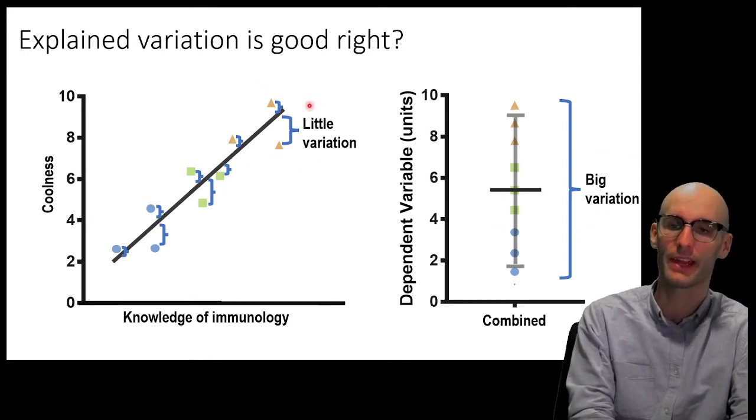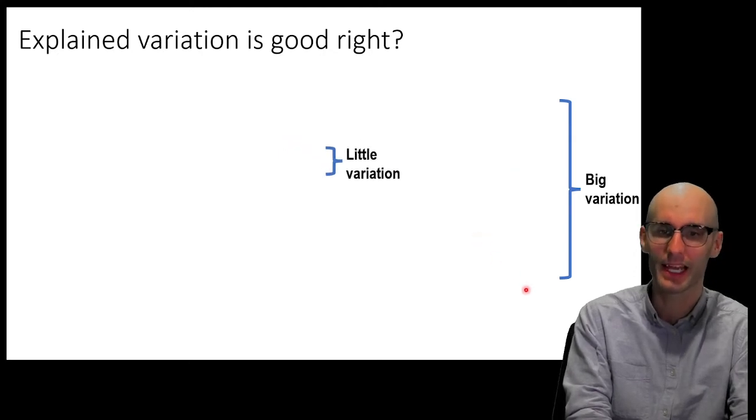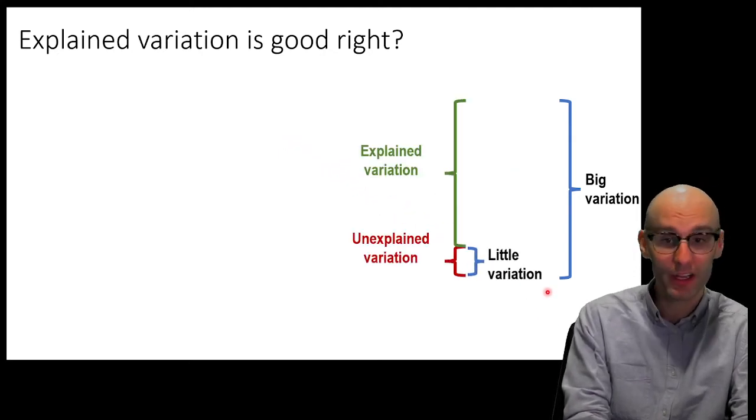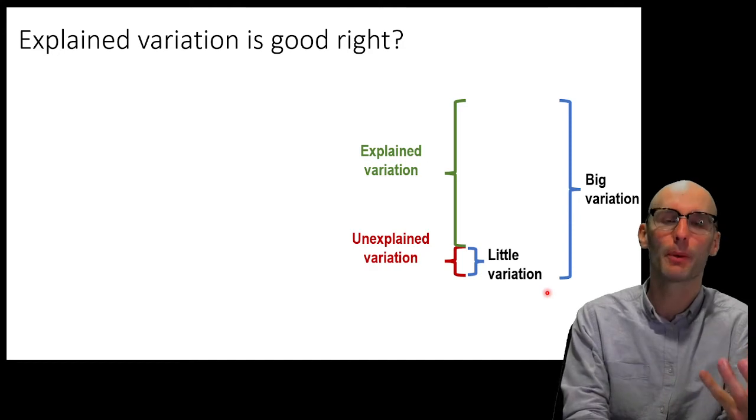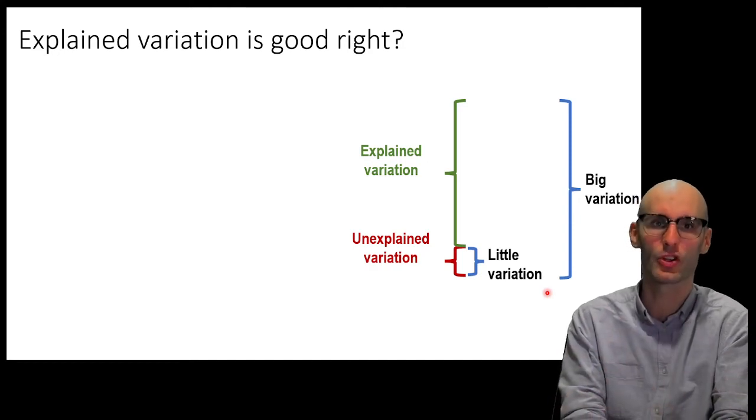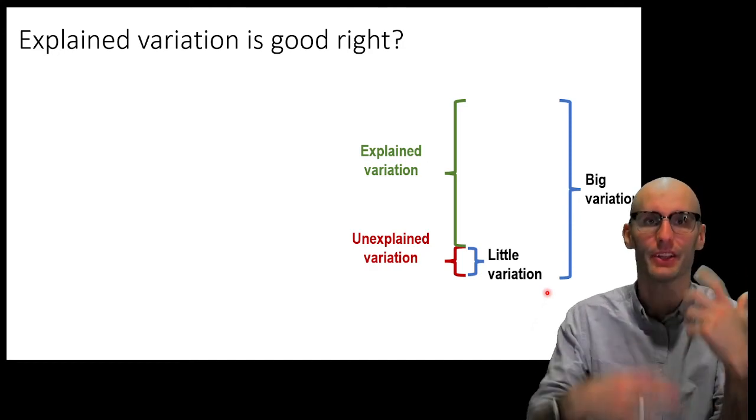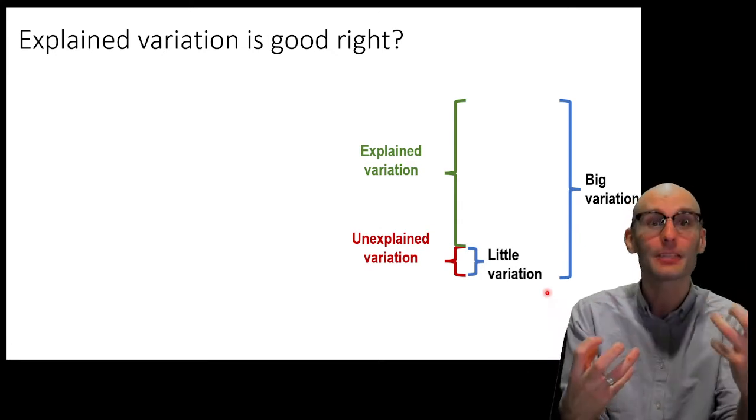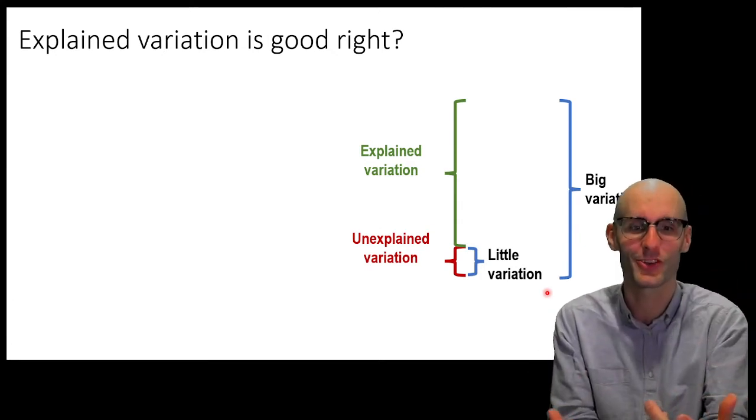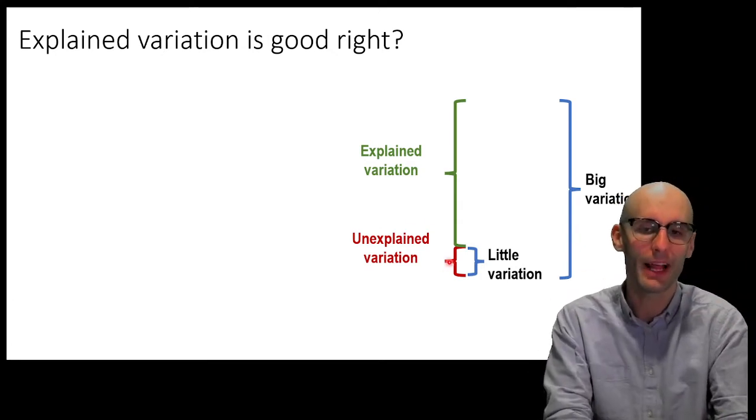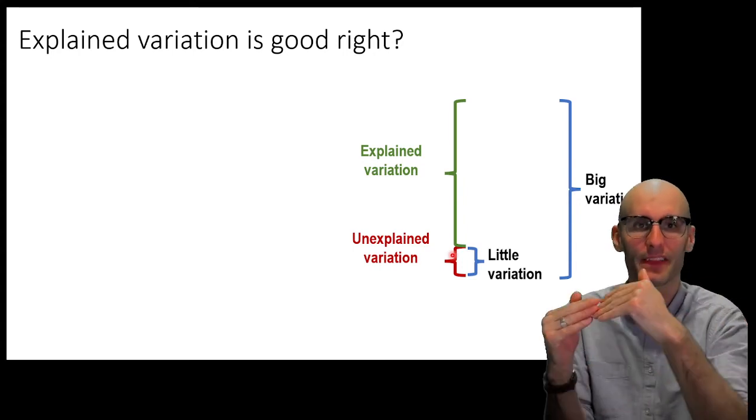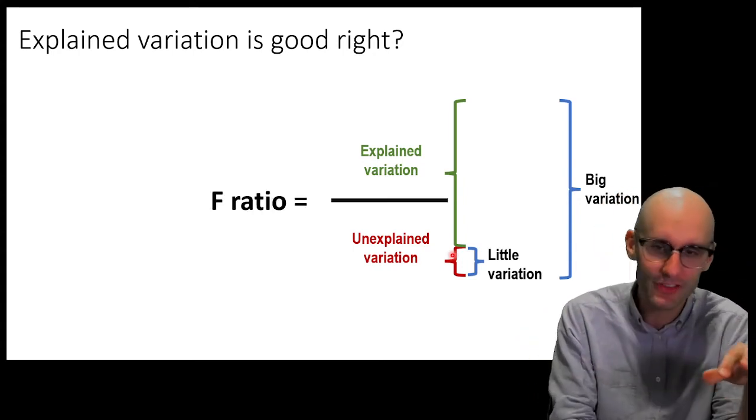So, if we take the average variation over here and the average variation over there, we can now have a look. And we can see that a huge proportion disappeared with our statistical model. That's explained variation. The variation in the data disappeared when we overlaid our statistical model. Fantastic. There was still a little bit of unexplained variation. The dots didn't sit perfectly on the line there.